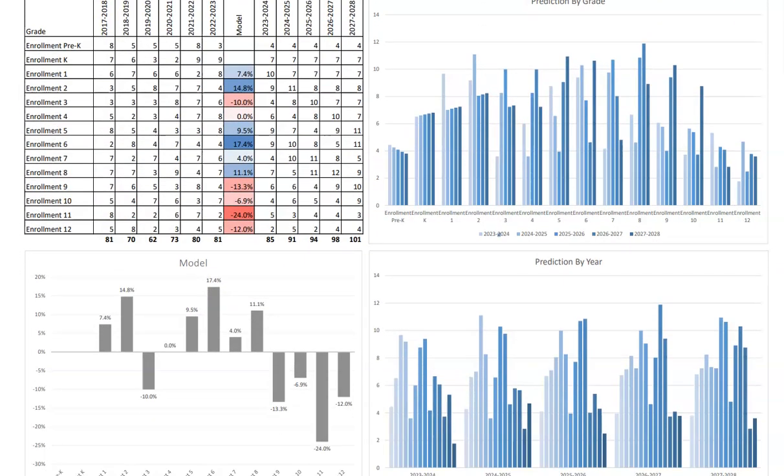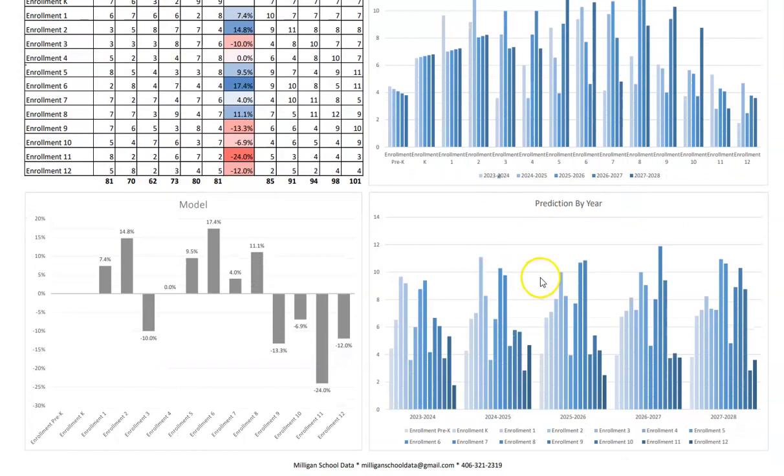If you scroll down, this graph down at the bottom shows the exact same data but instead of grouping it by grade and showing one bar per year, we group it by year and show one bar per grade. This gives you a sense of what the shape of your school will look like over the next several years. This would be one year following, this would be five years in the future, and you can get a sense of what shape your school will be.